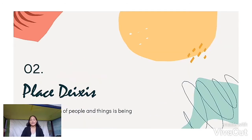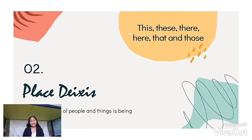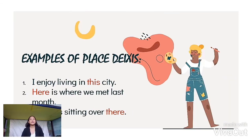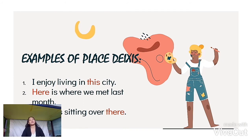So place diaccess is called a spatial diaccess. It is usually expressed in these, there, here, that, and those. So examples of place diaccess: I enjoy living in this city. Here is where we met last month. And she was sitting over there. So the red words are the examples of place diaccess.